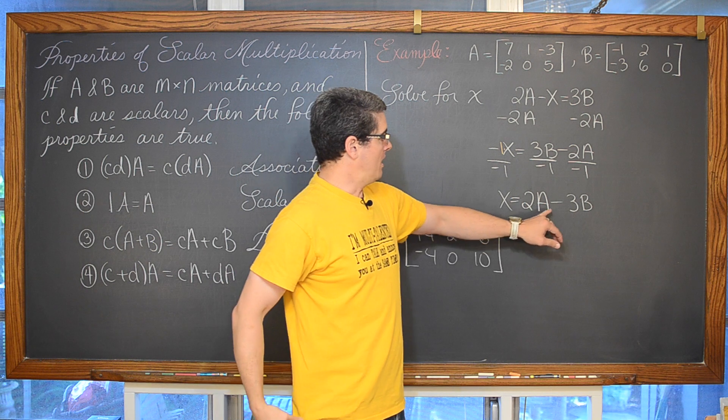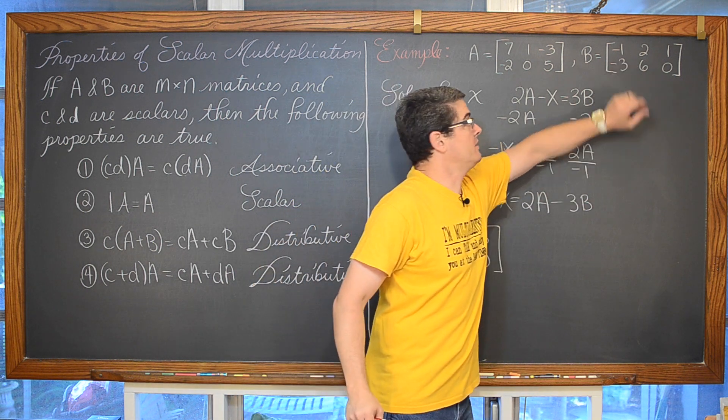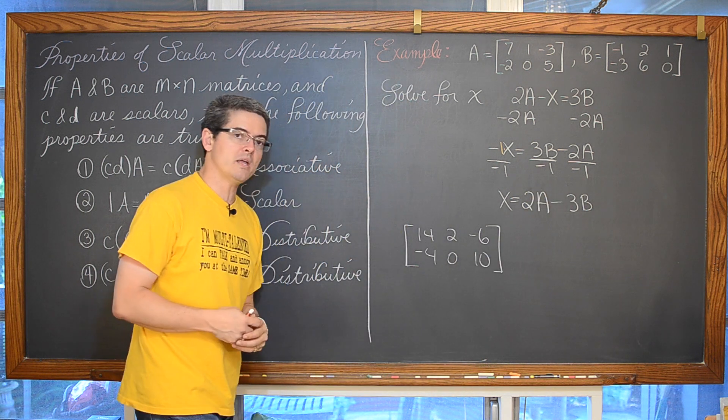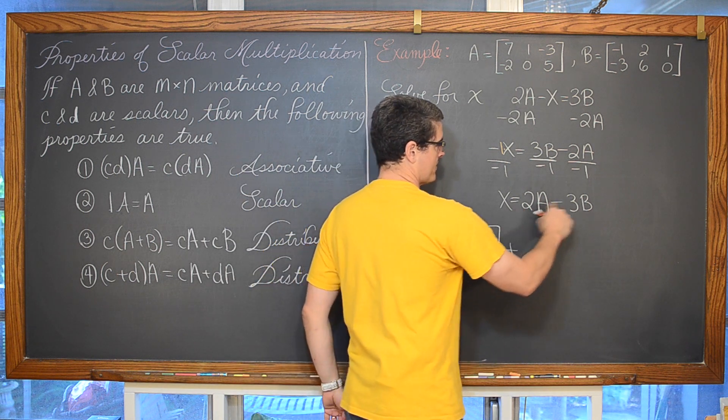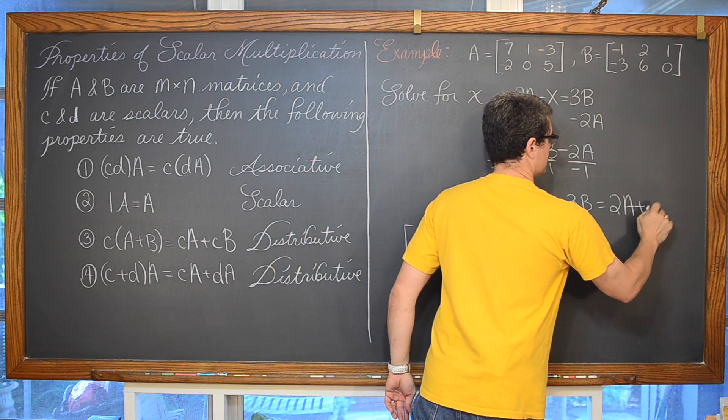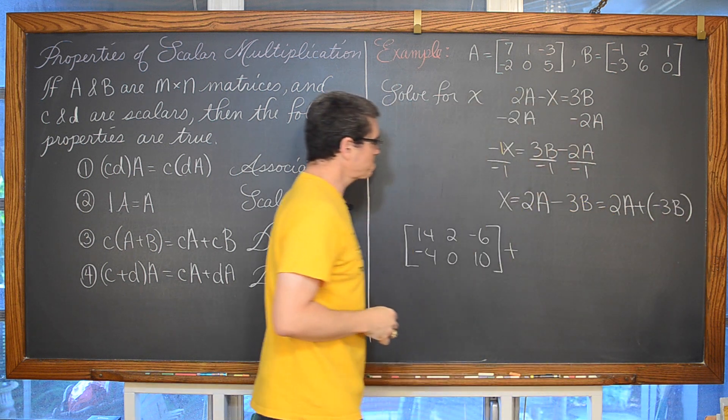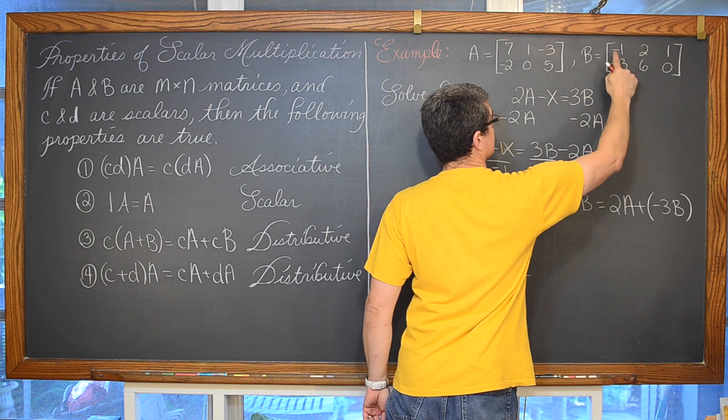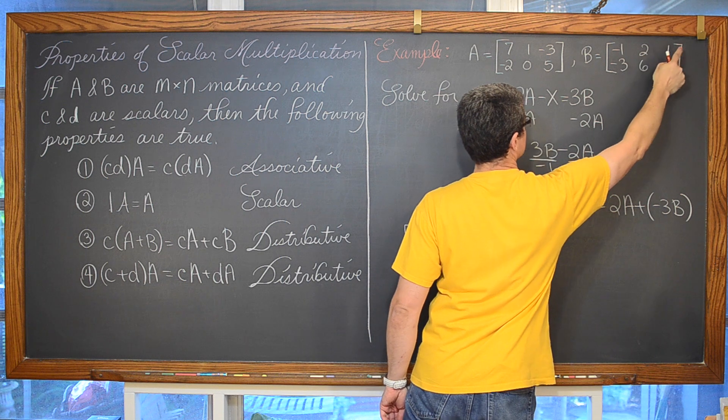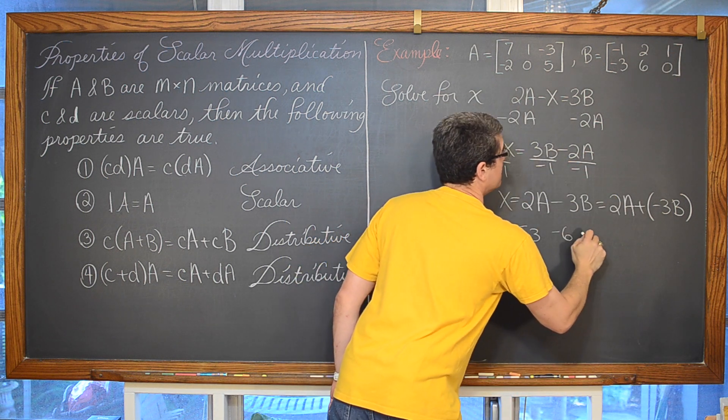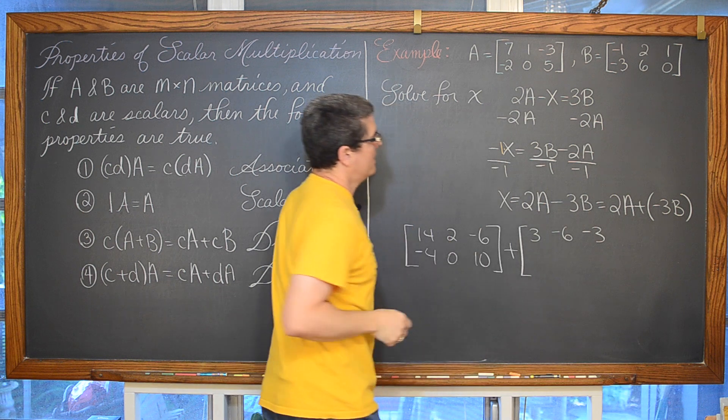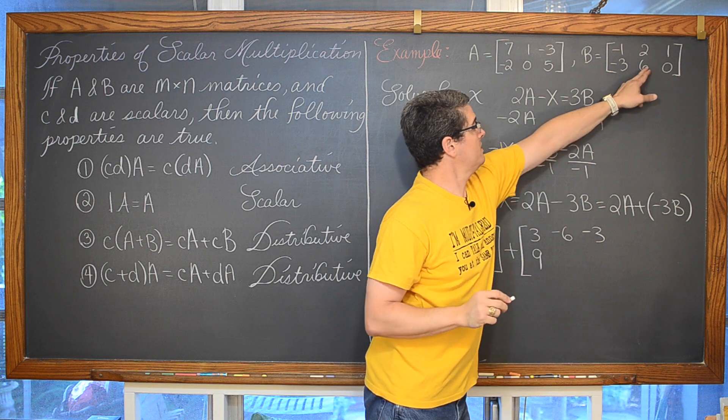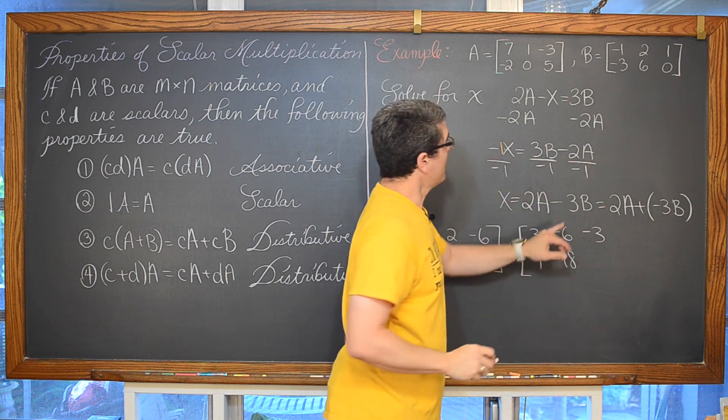And again, instead of doing a scalar multiple of 3 through here and then having to write minus and then distribute that negative as I go through the subtraction process with these matrices, I am going to put a plus and think of that as 2A plus negative 3B. And that is going to be negative 3 going through each of these. So positive 3, negative 6, negative 3. And again taking that negative 3 through the bottom row, we have 9, negative 18, and 0.